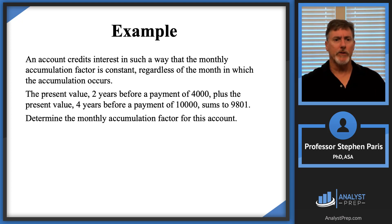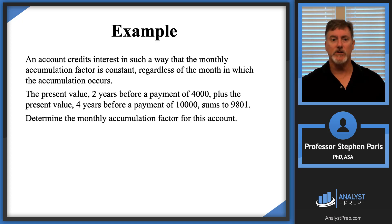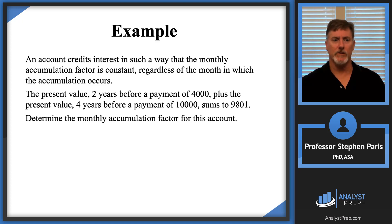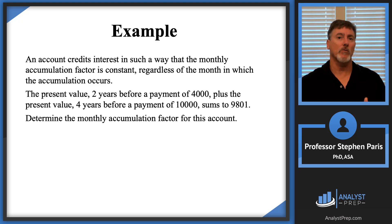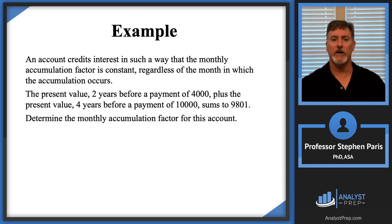An account credits interest in such a way that the monthly accumulation factor is constant regardless of the month in which the accumulation occurs. The present value two years before a payment of four thousand, plus the present value four years before a payment of ten thousand, sums to nine thousand eight hundred and one. We are asked to determine the monthly accumulation factor for this account.